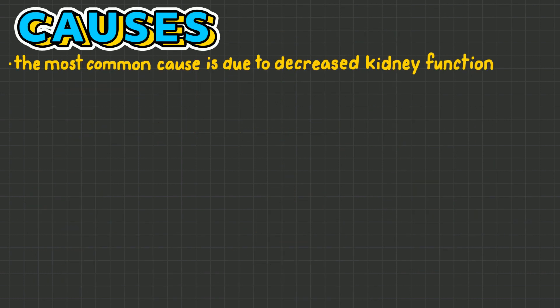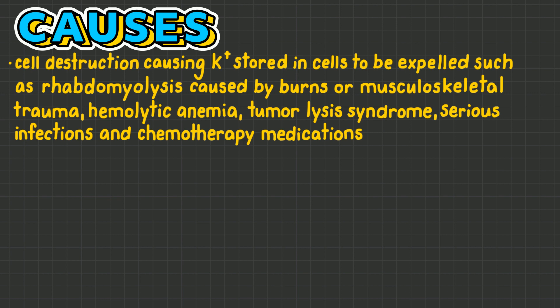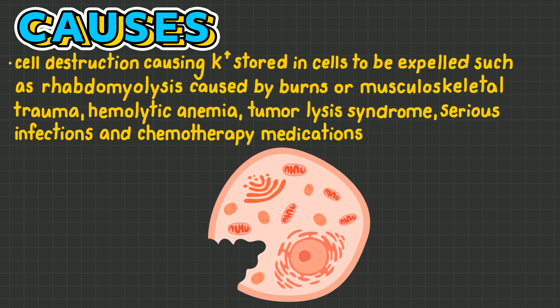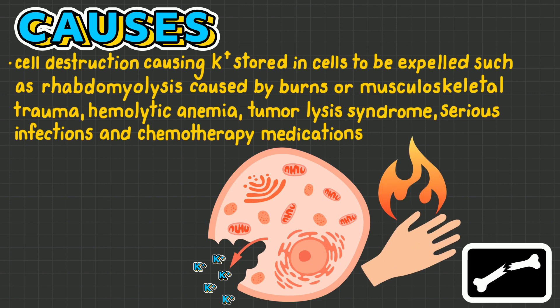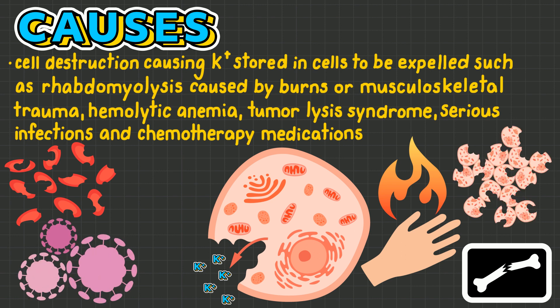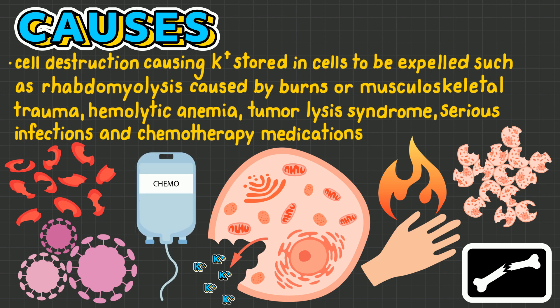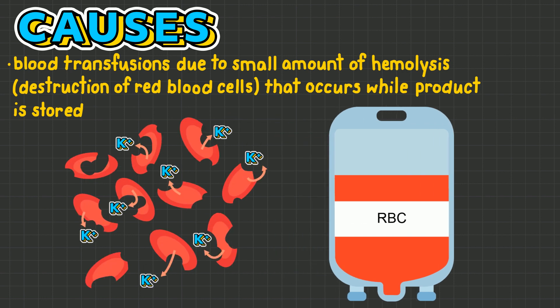The most common cause of hyperkalemia is related to decreased kidney function, such as acute or chronic kidney disease. Another common cause is cell destruction, resulting in the potassium stored within cells being expelled, such as with rhabdomyolysis caused by burns or musculoskeletal trauma, hemolytic anemia, tumor lysis syndrome, serious infections, and chemotherapy medications. Blood transfusions, especially mass transfusions, may also cause hyperkalemia due to the small amount of hemolysis that occurs while the product is stored.